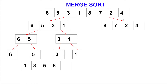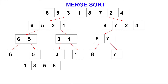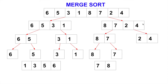Now divide. We divide 8, 7, 2, 4. We take care of the first half — 8 and 7. Divide them: 8 and 7. So we solve 8 and 7, these two individualized items — sorted order is 7 and 8. Then we come back to this level and divide 2 and 4. We divide them into individualized items that can compare. So 2 and 4 — they are already in order.